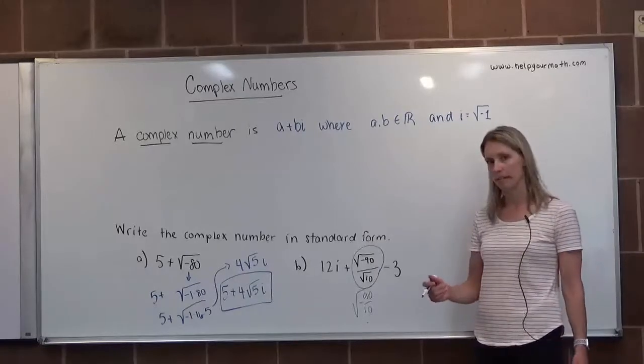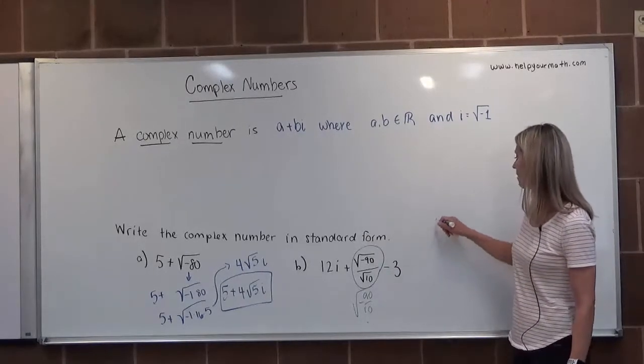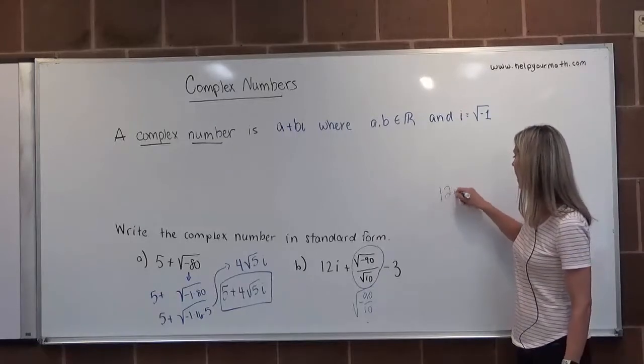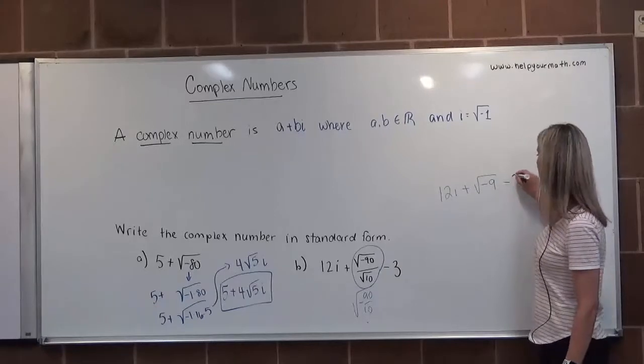So I can rewrite this as one radical and say negative 90 divided by 10. And then I can do 90 divided by 10. 90 divided by 10 is 9. So let's rewrite this. We have 12i plus the square root of negative nine minus three.